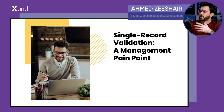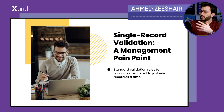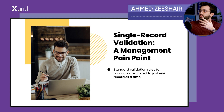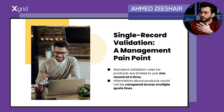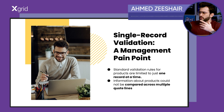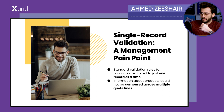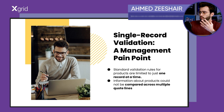Talking about product validation, standard validation rules for products let you only ensure that each product in the bundle meets desired requirements — for example, you don't exceed a specific quantity or end up with a negative price — but they are just limited to one record at a time.